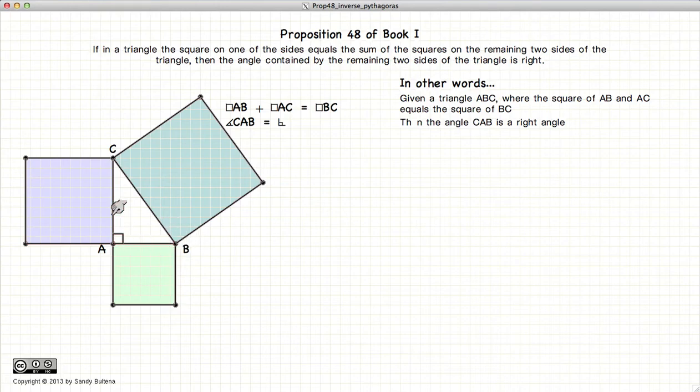It states that if you have a triangle where the sum of the squares on two sides equals the square of the third side, then in that case, the angle opposite the larger square will be a right angle.